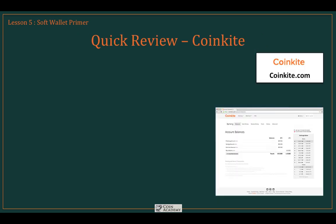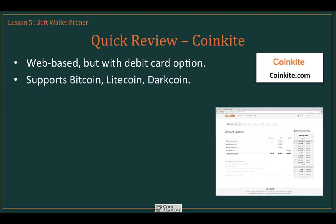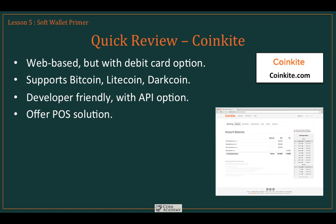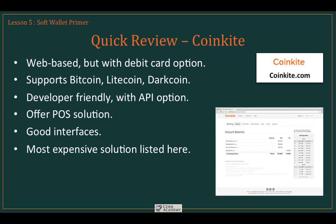CoinKite is a slick commercial product. It's web-based with a debit card option, giving you a way to spend your Bitcoin outside the house without full transaction capabilities for buying or adding Bitcoin. It supports Bitcoin, Litecoin, and Darkcoin — making it one of our multi-currency wallets. It's developer-friendly with an API, and it offers a point-of-sale solution, making it very attractive to merchants. It is, however, the most expensive solution listed here, with monthly fees particularly if you're using the debit card.